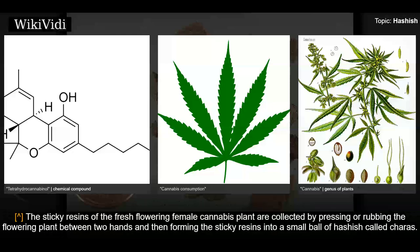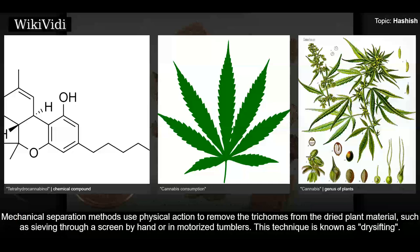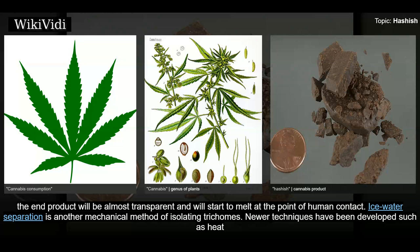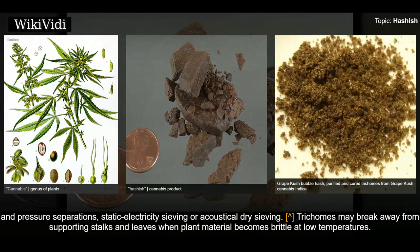The sticky resins of the fresh flowering female cannabis plant are collected by pressing or rubbing the plant between two hands, then forming the sticky resins into a small ball of hashish called shuras. Mechanical separation methods use physical action to remove trichomes from dried plant material by sieving through a screen by hand or in motorized tumblers — known as dry sifting. The resulting powder, referred to as kief or dry sift, is compressed with the aid of heat into blocks of hashish. Ice water separation is another mechanical method; newer techniques include heat and pressure separations, static electricity sieving, and acoustical dry sieving.